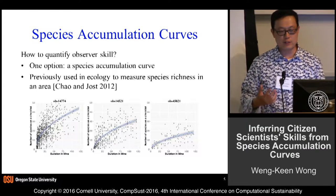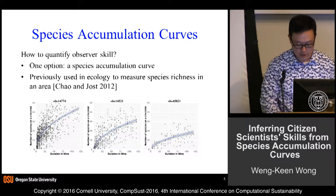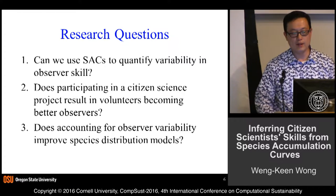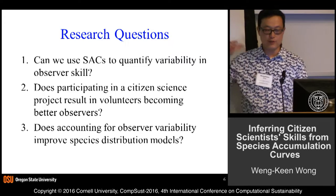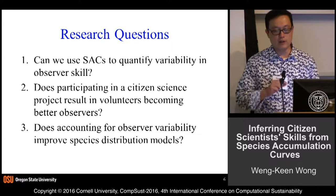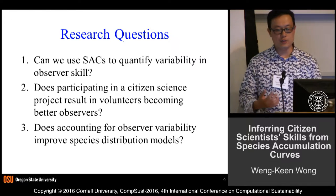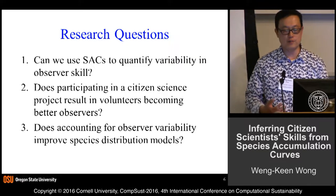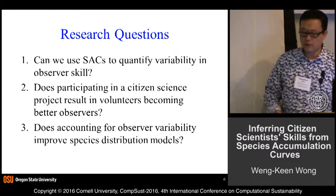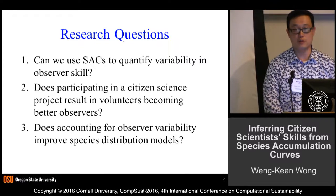What we're exploring is whether we can use these species accumulation curves to assess observer skill. The research questions are: Can we do that? Can we also look longitudinally — does participating in citizen science projects result in volunteers becoming better observers? And finally, if we account for observer variability, can we actually improve our species distribution models?